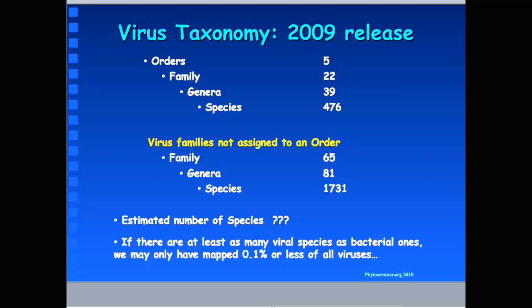We know some estimates about the number of species on planet Earth. Some estimates say there are about 2 million; others say up to 20 million different species. If we assume there are at least as many viral species as material ones, we have probably mapped no more than 0.1% or less of all viruses. Obviously, whatever we know about the distribution of viruses on this planet today is extremely little.